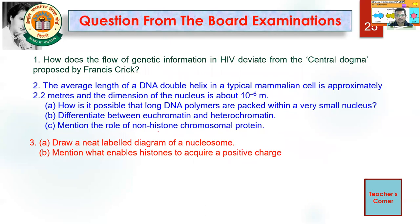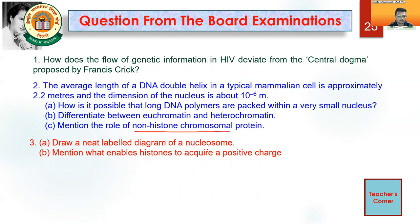There is a question that comes very handy in examinations: How does the flow of genetic information in HIV deviate from the central dogma concept? That comes as an exception. The average length of DNA double helix in a typical mammalian cell is approximately 2.2 meters, and the dimension of the nucleus is around 10⁻⁶ meters — how is it possible that long DNA polymers are packed within such a small nucleus? Differentiate between euchromatin and heterochromatin, mention the role of non-histone chromosomal proteins in packaging, draw a neat and labelled diagram of a nucleosome, and mention what enables histones to acquire a positive charge. I am very sure that now you are clear with the molecular structure of DNA. In the next lecture we will be talking about how scientists reached these conclusions through brilliant experiments.